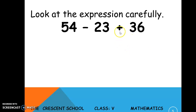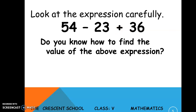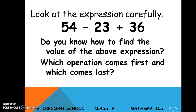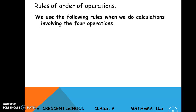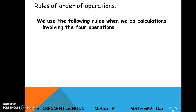Look at the expression carefully: 54 minus 23 plus 36. As you can see, there are two signs — the first is minus and the second is plus. How do you solve this expression? Which operation comes first and which comes last? To sort out such expressions, we have certain rules called the rules of order of operations.